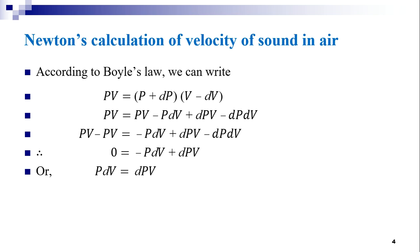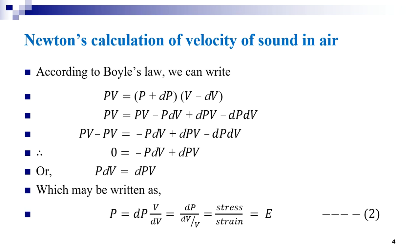This gives P·dV = dP·V, which rearranges to P = dP·(V/dV) = dP/(dV/V). Here dP is the change in pressure, representing stress in the medium, and dV/V represents the strain. This ratio of stress to strain gives the elasticity E, also known as the isothermal elasticity of the medium.